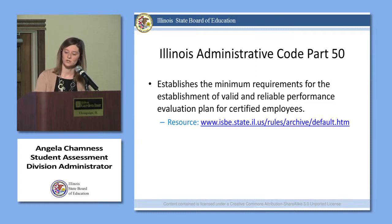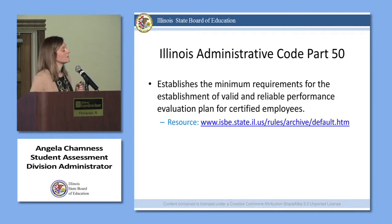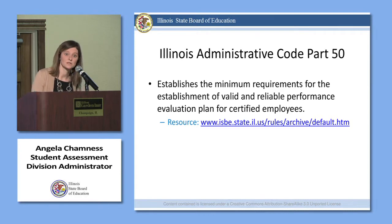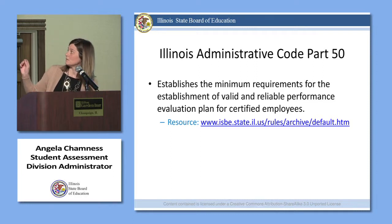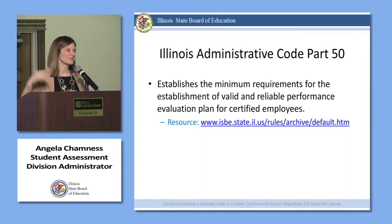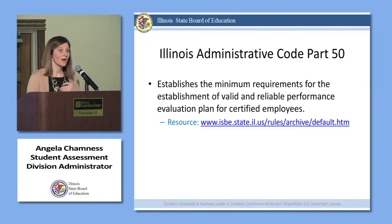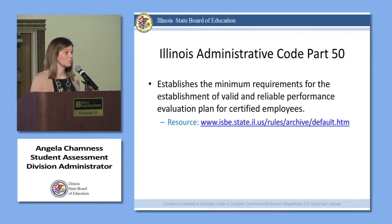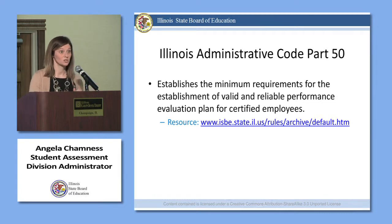The Illinois Administrative Code, Part 50, establishes the minimum requirements for a valid and reliable performance evaluation plan for certified employees. All of these resources in the PowerPoint have clickable links as well as a resource page. If you haven't read the Part 50 rules, I would highly encourage you to do that — it is your most reliable source of information for questions about the requirements for PERA and evaluation of certified staff.